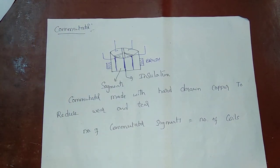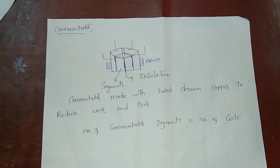When the armature rotates in the magnetic flux, the conductors cut the flux and EMF is induced. In a DC machine, the alternating voltage is induced internally in the armature.